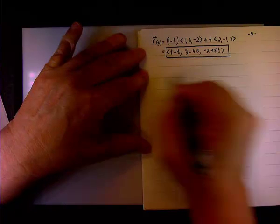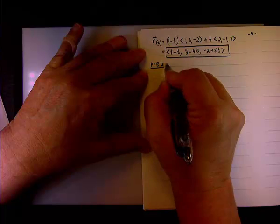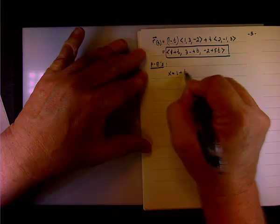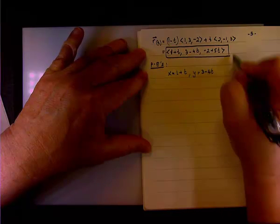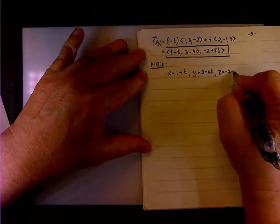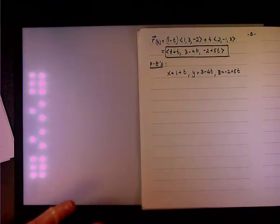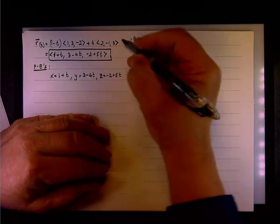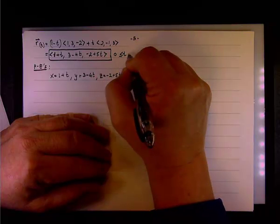And this is the vector equation. So, here's one answer. Here, the parametric equations: X equals 1 plus T, Y equals 3 minus 4T, and Z equals negative 2 plus 5T. And I forgot something? What did I forget?